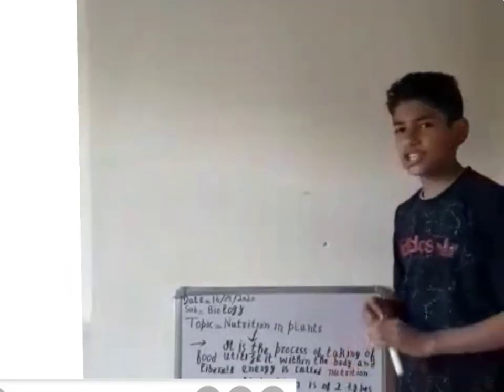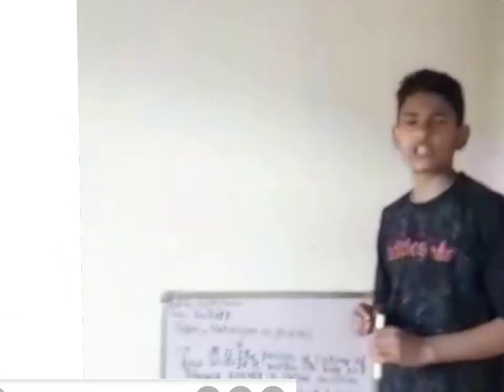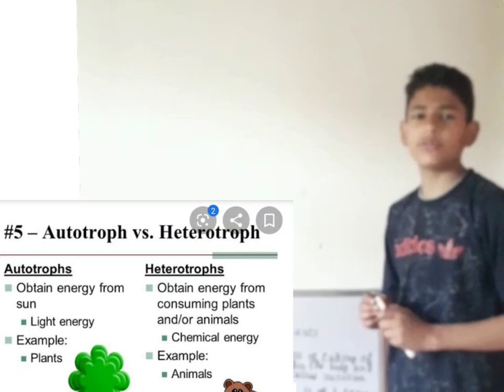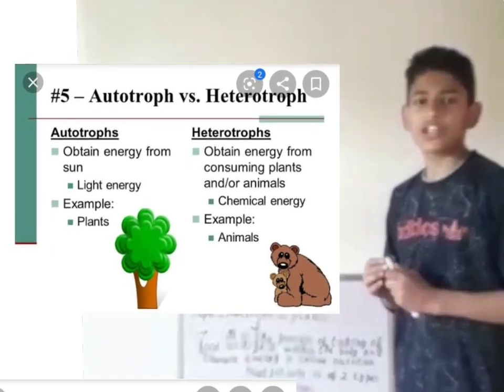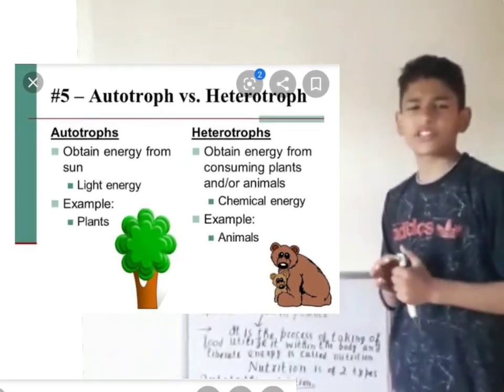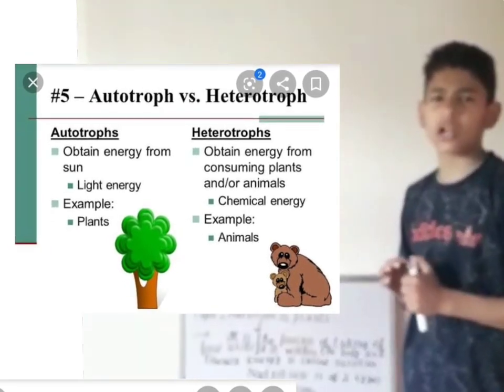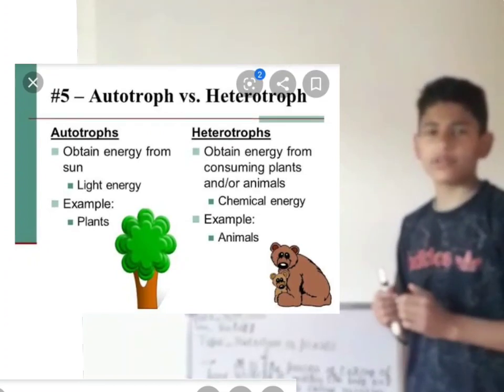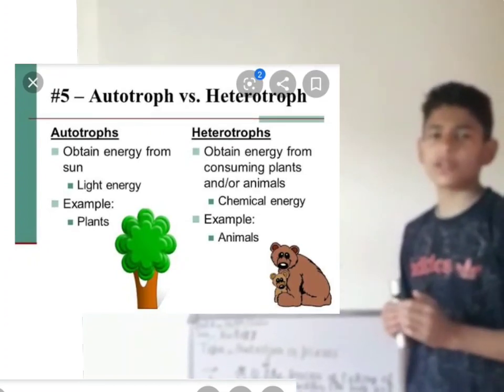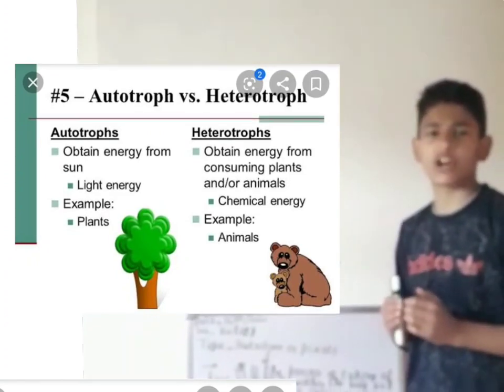Autotrophic is a type of nutrition in which living organisms, particularly green plants, can manufacture their own food. Autotrophic nutrition is a type of nutrition in which living organisms — the plants — manufacture their own food.